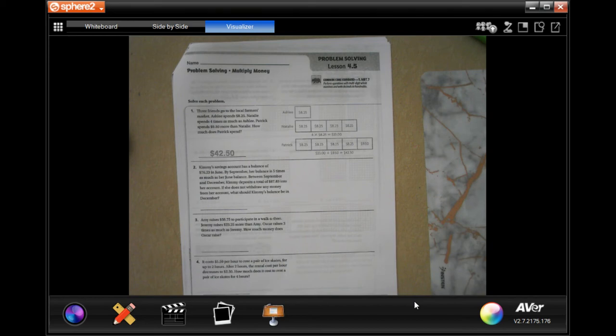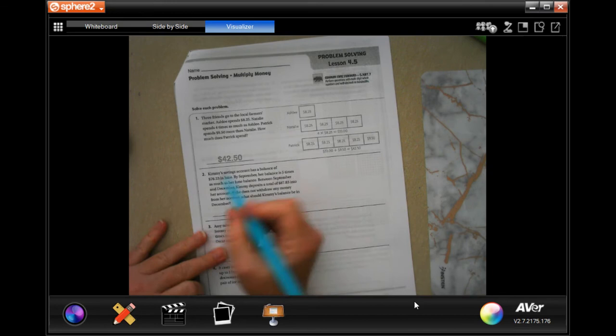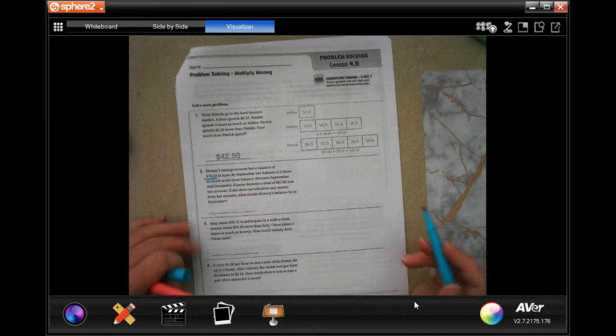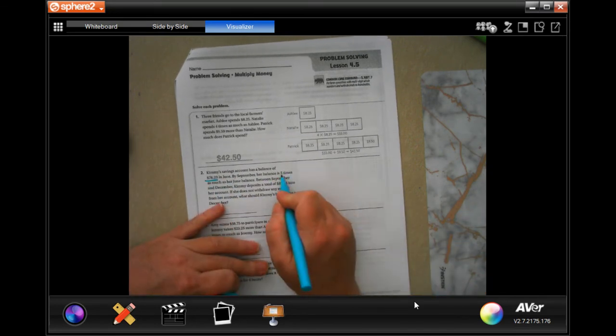Hi guys, welcome to fifth grade Chapter 4 Lesson 5. We're gonna go ahead and get started with number two. Number two says Kimmy's savings account has a balance of $76.23 in June. By September her balance is five times that.